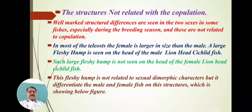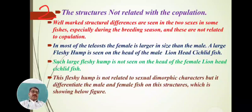The second category covers structures not related to copulation. There is no direct relation between copulation and these structures, but they are present in one sex and absent in the other. Well-marked structural differences are seen in two sexes of the same species, especially during the breeding season.